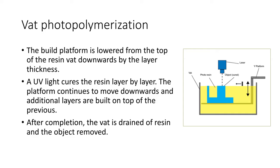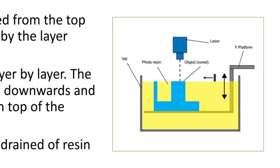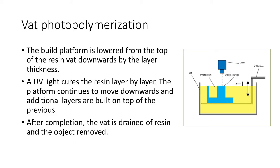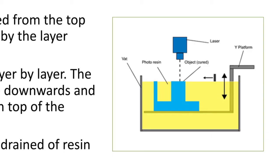The first process is vat polymerization. The build platform is lowered from the top of the resin vat downwards by the layer thickness. The setup consists of a vat — also known as a tank — which contains photoresin, a laser or ultraviolet light source, and a platform. The laser source cures the photoresin layer by layer; after curing each layer the platform moves down by the layer thickness. After completion, the vat is drained of resin and the object is removed.